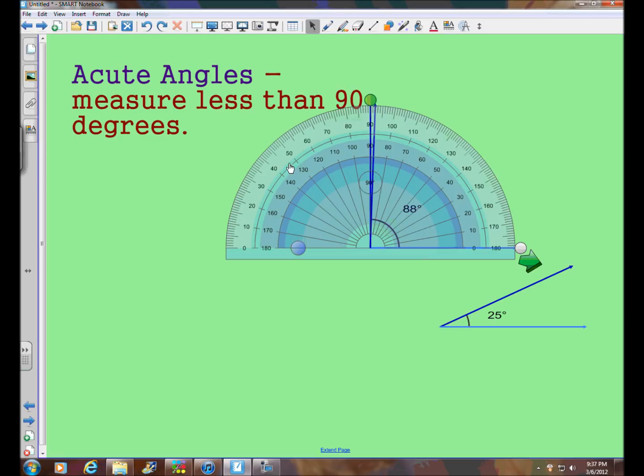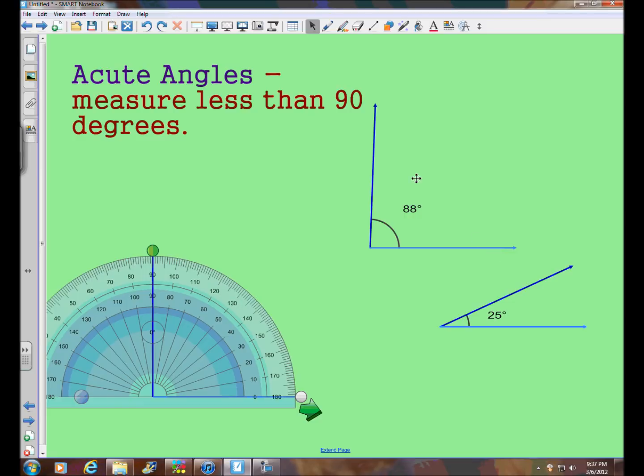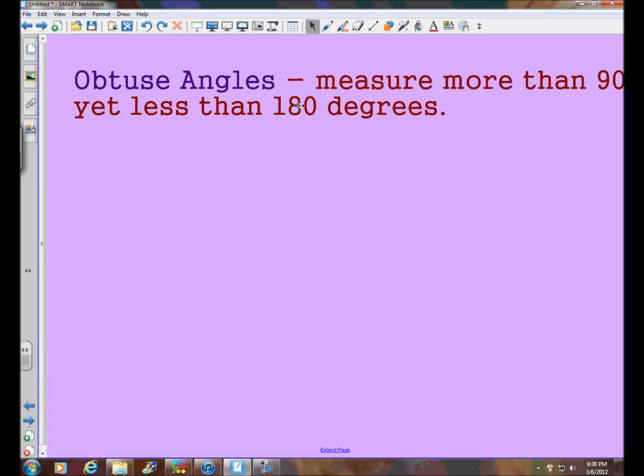Let's move this out of the way. So these are both examples of acute little angles. They are less than 90 degrees. Acute angles, less than 90 degrees.